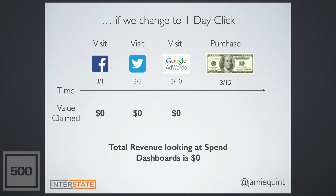You might think: well, I can change the parameters in my ad dashboards — I'll just change everything to one-day click and things will be okay. But that doesn't always work either. Say someone signed up after viewing one of these ads, then you sent them an email, and that's what caused them to purchase. You're going to look at the dashboards and see zero dollars — and that's not true. If you change it to seven days, then AdWords gets all the credit. But as we said, that may or may not accurately represent what you actually want. The point is that if you're just using publisher dashboards to understand your marketing, you're going to get an incomplete, sometimes wrong, and often confusing picture of how your ads are actually performing.